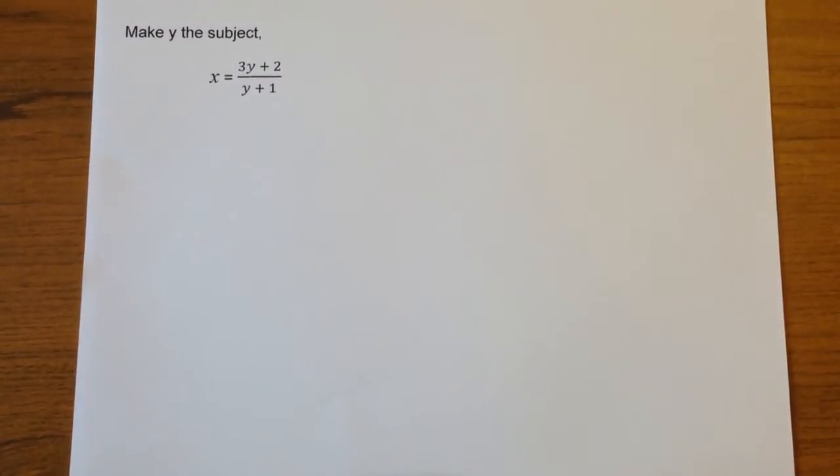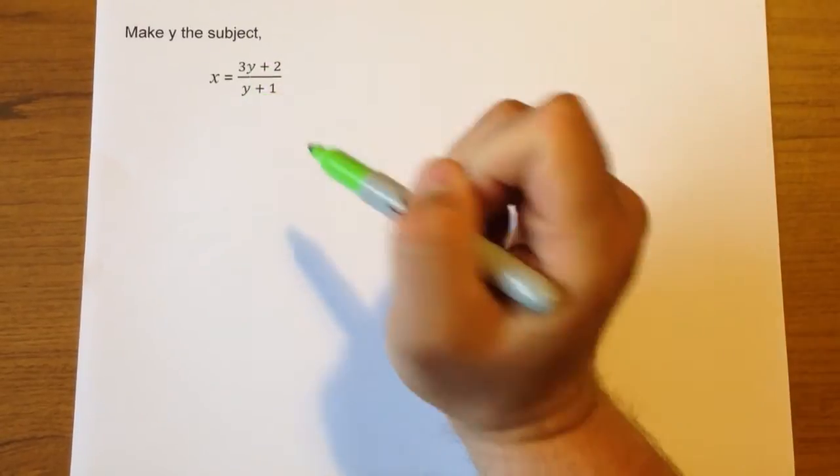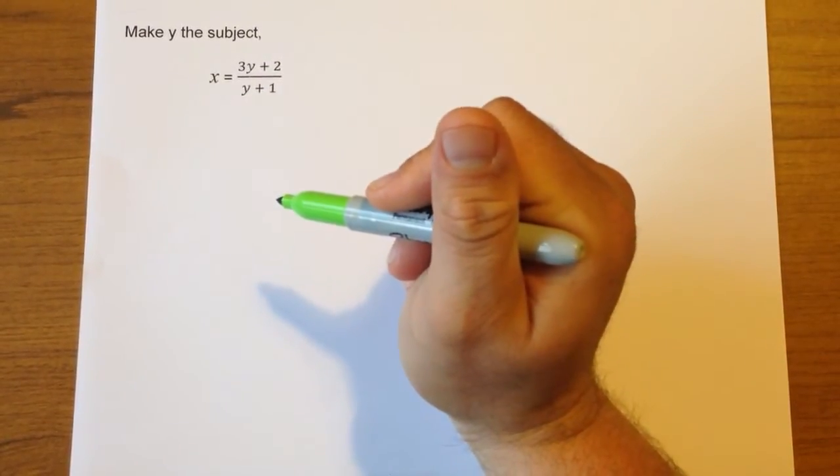This is probably the most complicated 'make the subject' type of question you'll have to do at GCSE. Here we're going to make y the subject. You can see there's a y on the top and a y on the bottom - that's the only part that makes it complicated.